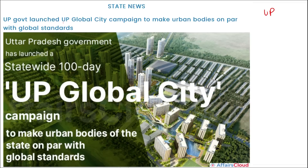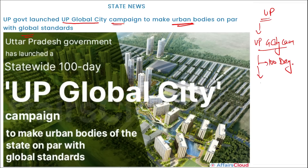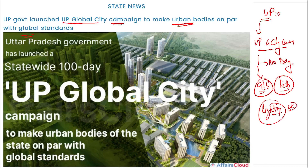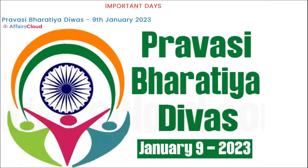First, we are talking about Uttar Pradesh. The UP government has recently launched the UP Global City Campaign to make urban bodies on par with global standards. This is a 100-day-long campaign launched before the Global Investors Summit that will be held in February. The aim is that urban areas and cities in UP should meet global standards, including proper lighting for high-rise buildings and infrastructure.